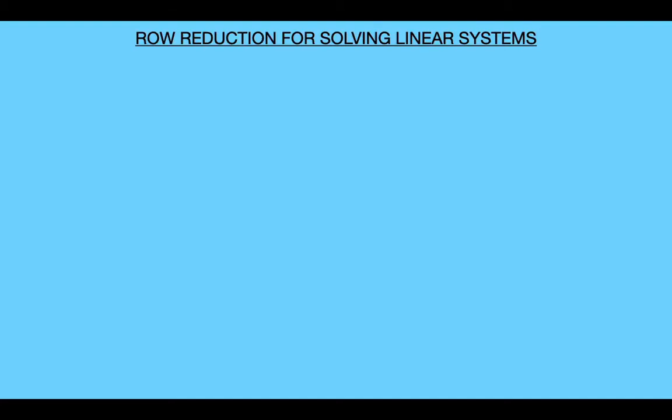Hey, what's up YouTube? So in the last video, I introduced the row reduction algorithm, which provided a method for transforming any matrix into a row equivalent matrix in reduced echelon form. And now in this video, we're going to see how we can use this algorithm to find an explicit description of the solution set of a linear system.